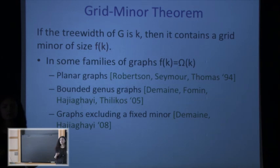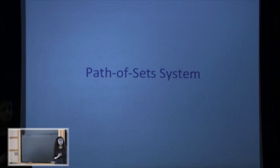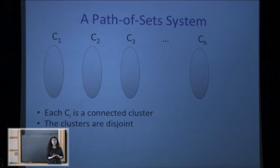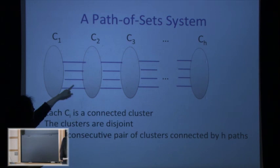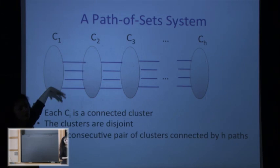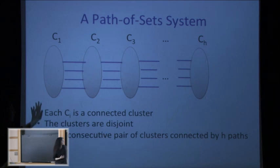Now I'll focus on the proof of the grid minor theorem, starting by defining one of the main combinatorial objects we use, which we call the path-of-set system. We use one parameter h — which will eventually be about k^ε. First, we have h disjoint clusters, where each cluster is a connected subgraph of our graph: C_1, C_2, …, C_h ordered in this way. Then for every consecutive pair of clusters we have h disjoint paths connecting them, and this collection of h paths connecting say C_1 to C_2 is called a bundle.